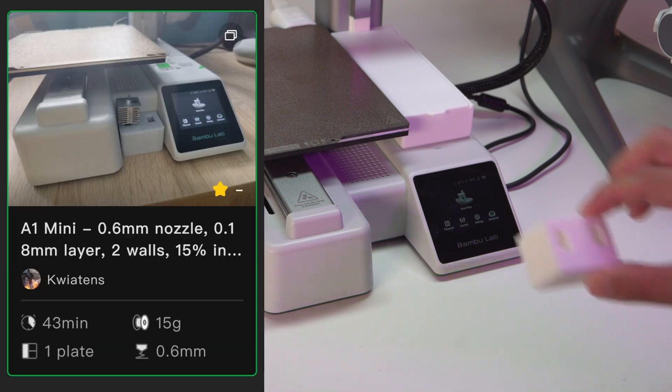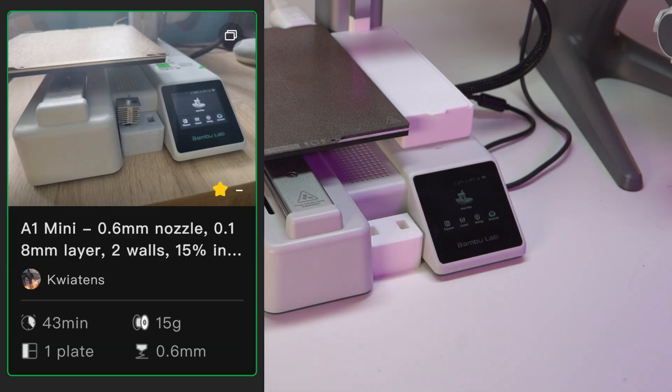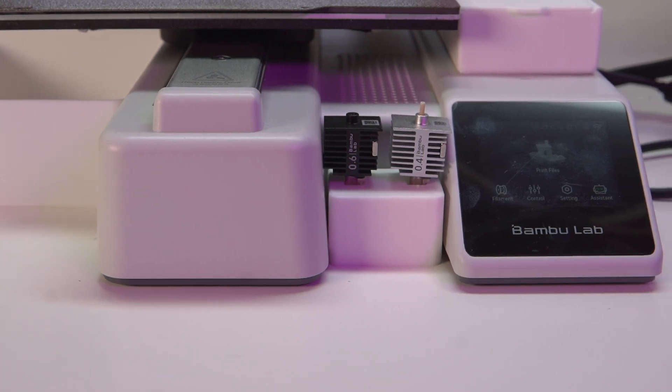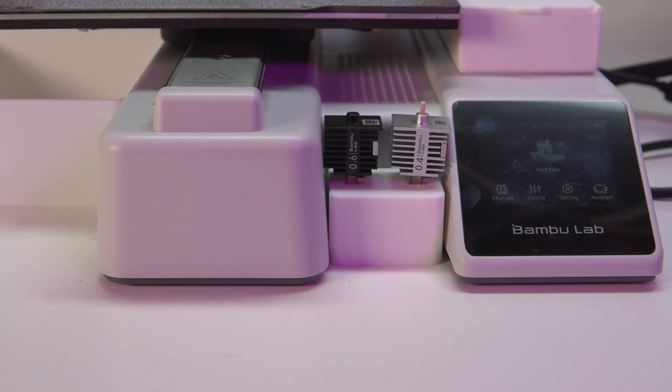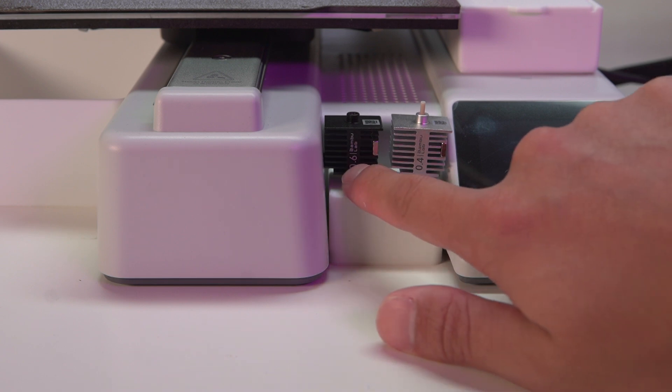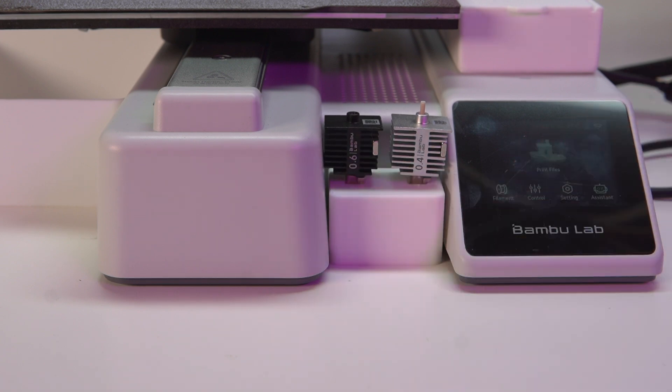This next one is going to take 15 grams of filament and 43 minutes of your time. If you swap nozzles a lot, this is a must print right here. It keeps all of your nozzles nice and close, you can see exactly what they are. We got our 0.4 and our 0.6 hardened nozzle. Super easy to see what you are working with and it keeps them very close to the print head for easy exchanges.